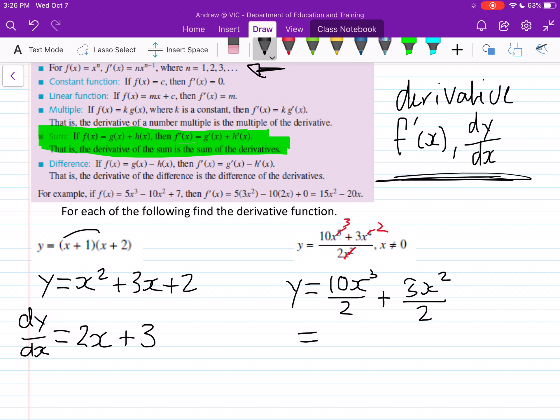So the first one, this one simplifies down to 5x to the power of 3, and then we're just left with 3 over 2x squared.